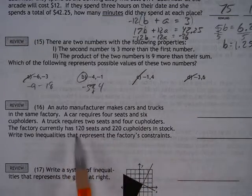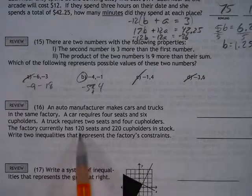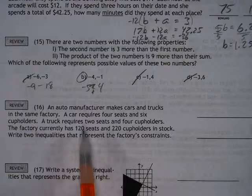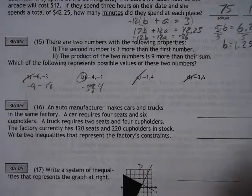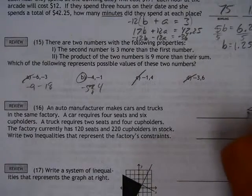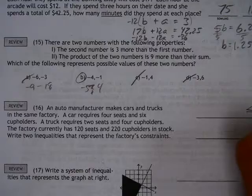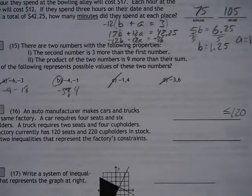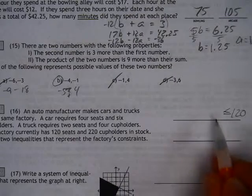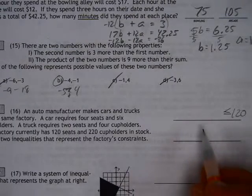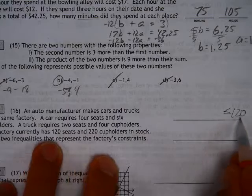but you got to be careful because what we're given here is we have constraints. We have 120 seats to work with, and 120 seats go into both cars and trucks, so we can't have any more than 120. But if I'm setting up an inequality to represent this, I have a certain number of cars and trucks that I can make, so our variables should be c and t.